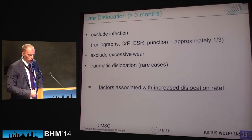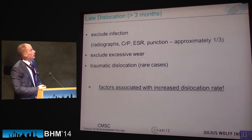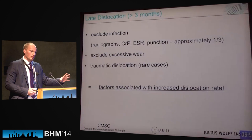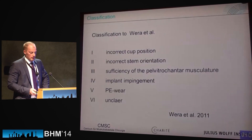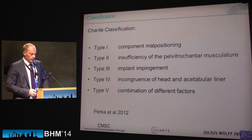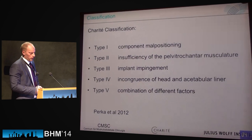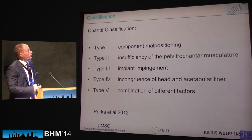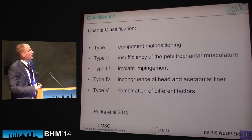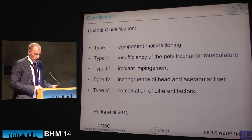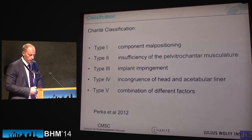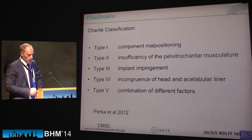Late dislocations are typical for infection or excessive effusion problems in the joint, pressing the head out of the acetabulum. For classification, we know the classification by Vera, and we have developed the Charité classification by Professor Perka, divided into four types. Type 1 is a component malposition problem. Type 2 is insufficiency of the pelvic joint muscles with implant impingement. We also have incongruence of the head and acetabular liner caused by effusion from infection or wear, and combined problems.